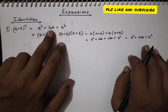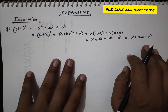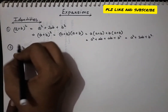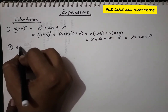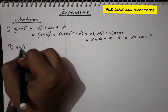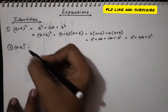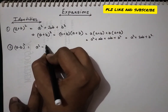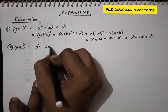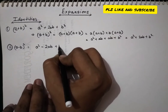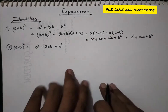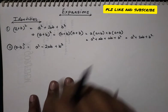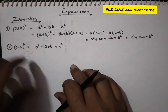The next identity is (a − b) whole square, and that equals a² − 2ab + b².